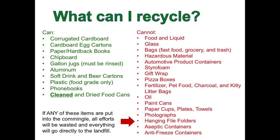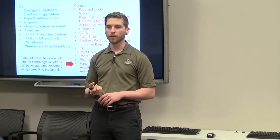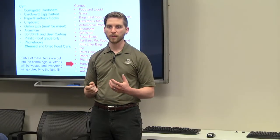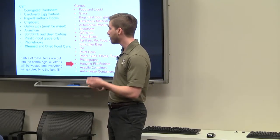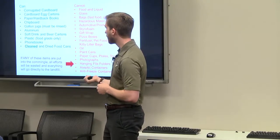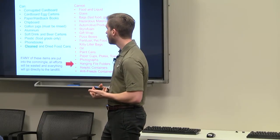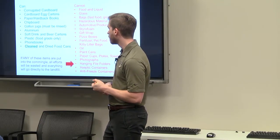So what can be recycled? Corrugated cardboard, egg cartons, paper and hardback books. Chipboard, if you've ever bought kind of the cheap furniture from Target or Walmart that you take home and put together. Some people call it particle board or MDF. That can be recycled. Plastic gallon jugs, aluminum soda and beer cans, phone books.